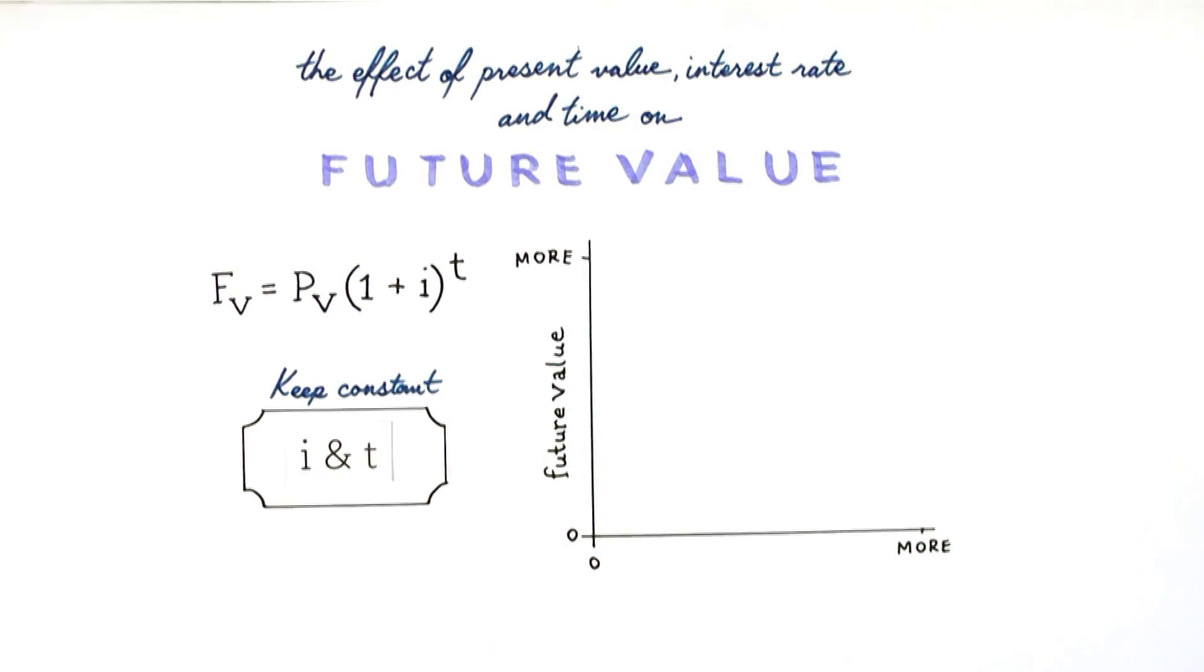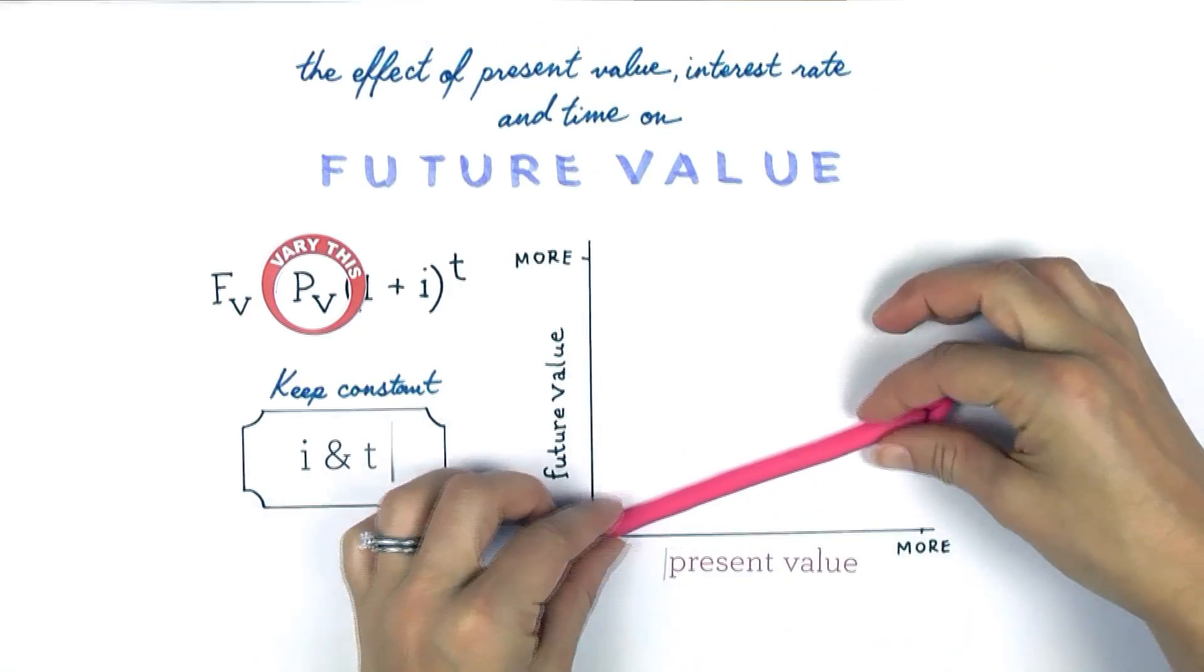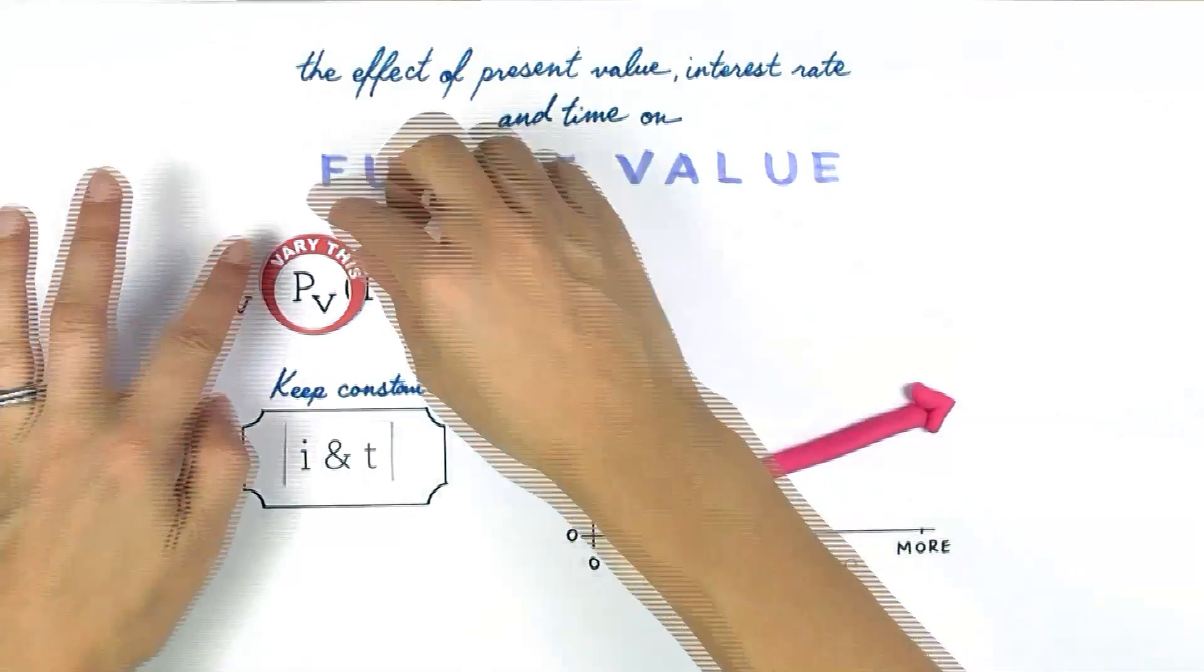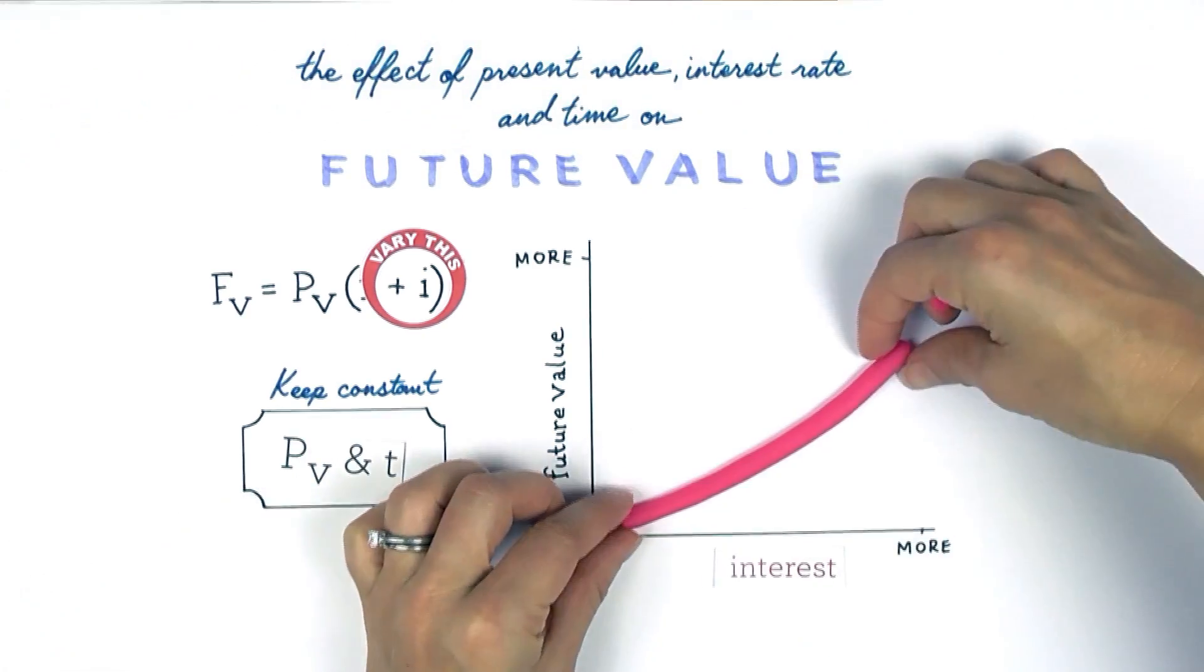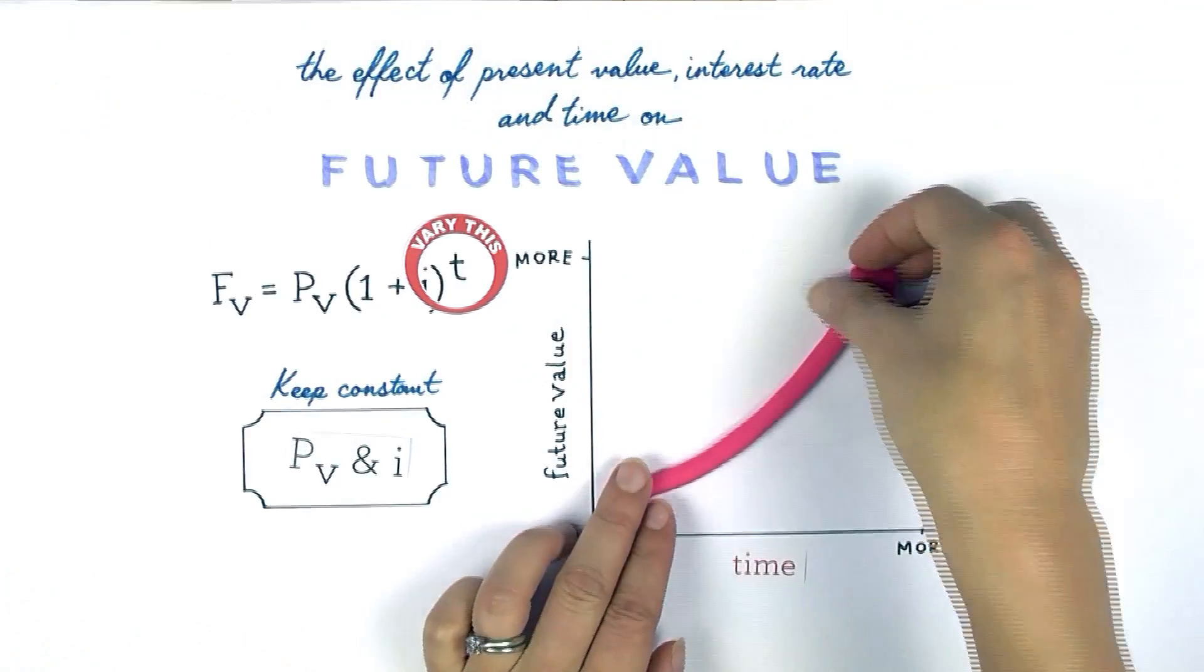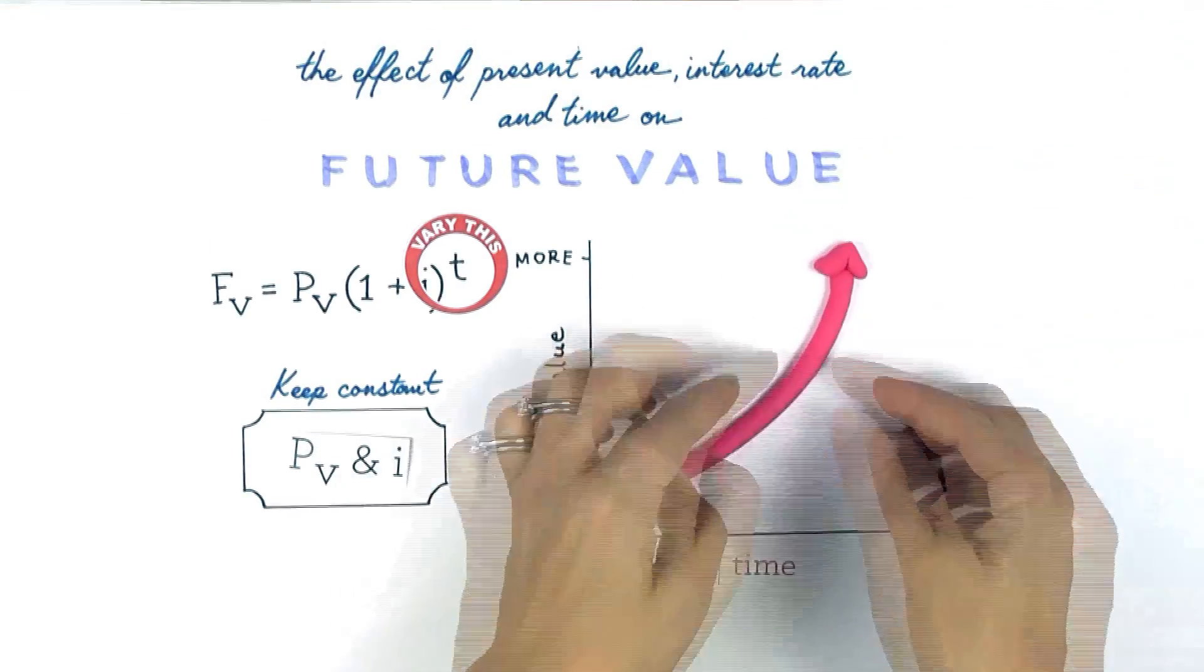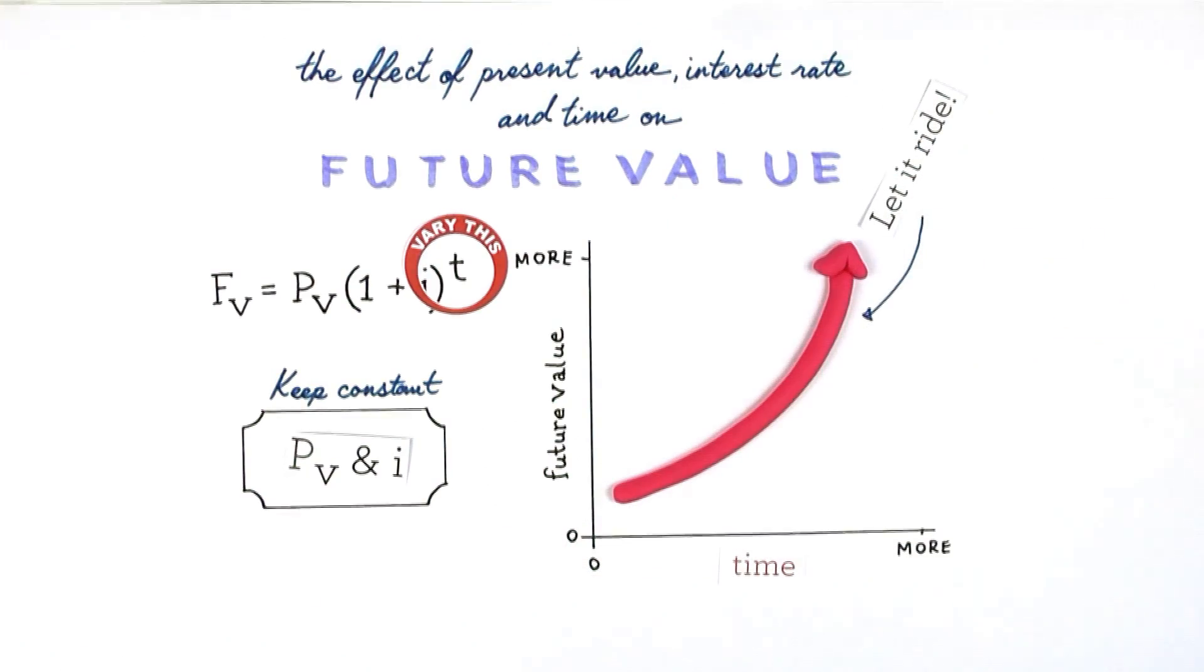Keeping time and interest rate constant, you can see that changing the present value will have a linear effect on your results. Increasing the interest will begin to curve the line of your results graph upward, gaining momentum for your investments. And just by increasing the time your principal is invested, you'll supercharge your results and give the biggest boost to your future value. Bottom line, more time equals more money.